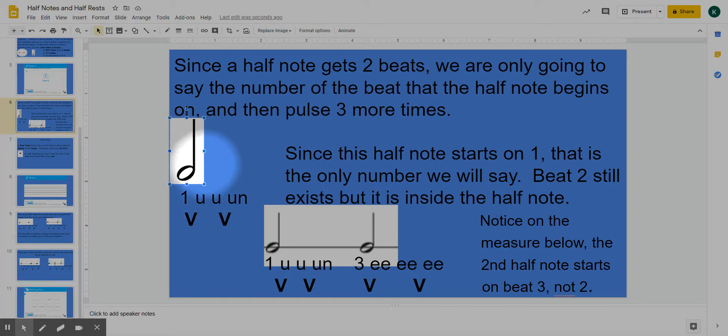So here is one half note. It's going to be starting on the beginning of the measure, because we only have one note, and so we're going to say only beat one. Beat two still exists. You can see you have two foot taps, and beat two still exists, but it doesn't get said because beat two is inside this note right here. Okay, so we're going to say beat one. Beat two still exists, but we're not going to say two.